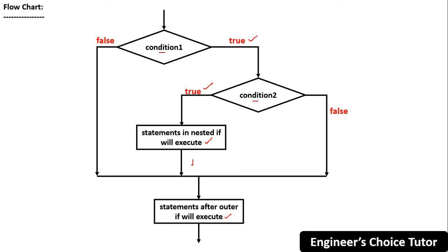Now suppose condition one gives false — if condition one is false, then control will go to the end of the outer if statement and statements after the outer if will execute. Another case: if condition one is true, then condition two evaluation takes place. If condition two is false, then control will come out from the outer if and statements after the outer if will execute. This is the complete flowchart for nested if statement.